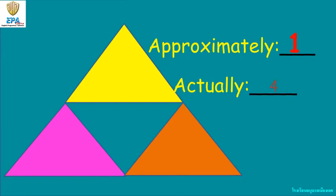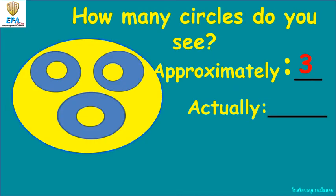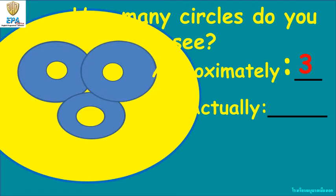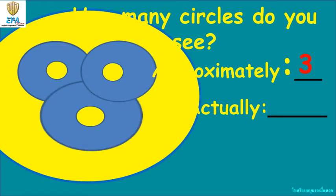Are you having fun, kids? How about these circles — how many circles do you see? Approximately you can see three circles, but if we are going to count: one, two, three, four, five, six, seven — there are actually seven circles.